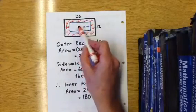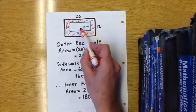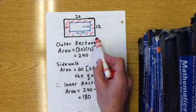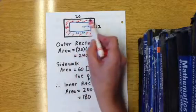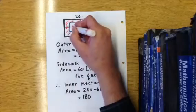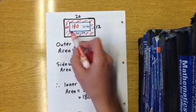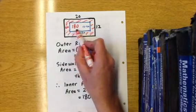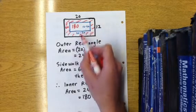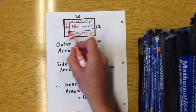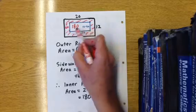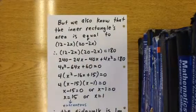That means that the interior one, this inner blue one, must be the area of the outer one, which is 240, minus the area of the frame, which is 60. So 240 minus 60 is 180. What we have is an interior rectangle with an area of 180 that's 12 minus 2x by 20 minus 2x. In other words, the area of this interior one, 20 minus 2x times 12 minus 2x equals 180.